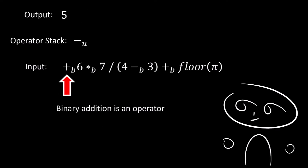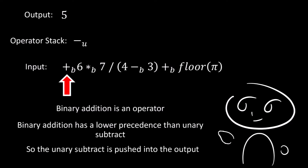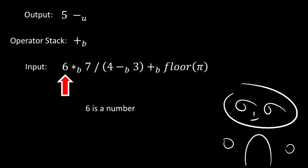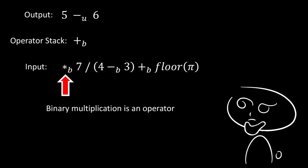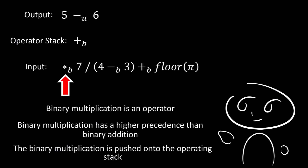Next, we find a binary addition, which is an operator. Since binary addition has a lower precedence than the unary subtract in the operator stack, the unary subtract is pushed into the output, and then the binary addition is pushed into the operator stack. Next, we have the number 6, which simply gets pushed into the output. Now we find a binary multiplication, which is an operator. Binary multiplication has a higher precedence than binary addition, so the binary addition in the operator stack stays where it is, and the binary multiplication is pushed into the operator stack.